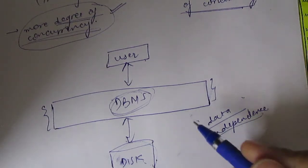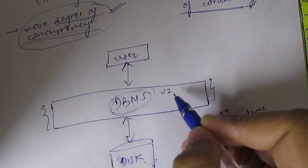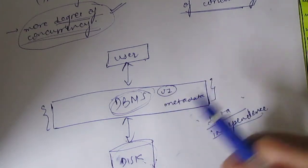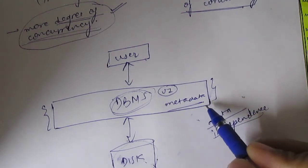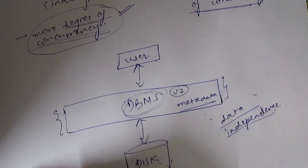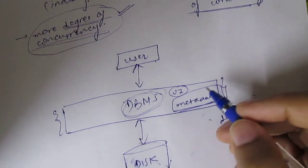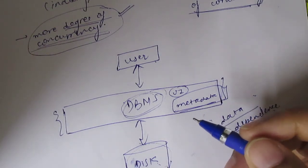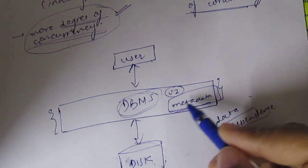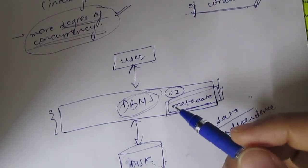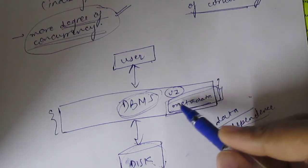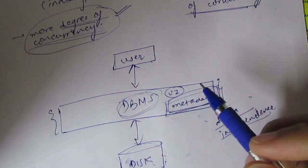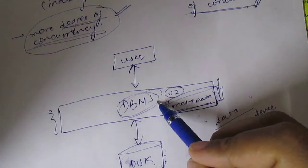In DBMS, there will be a user interface (UI) showing how users interact with the software, and there will be metadata. Metadata stores information about how data is stored in DBMS — file formats, the location of files on the disk, names, and other details can all be defined in metadata. That is why we store metadata in DBMS.